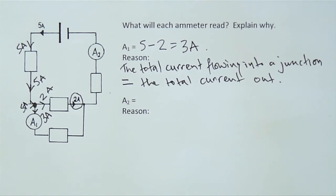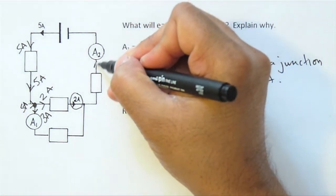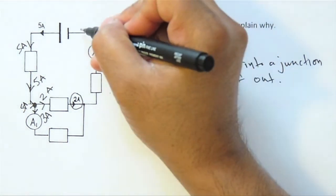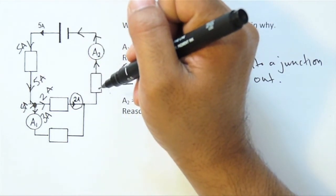Now let's take a look at A2. A2 is essentially telling us the current that's flowing back into the battery.